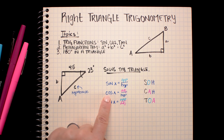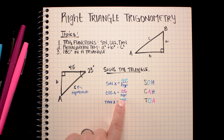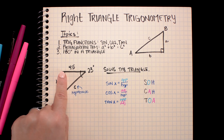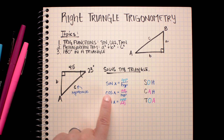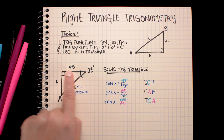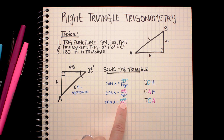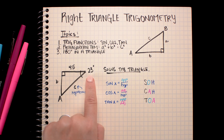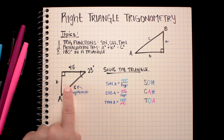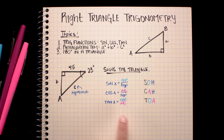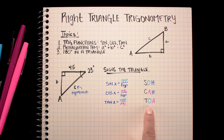The cosine of angle X equals the adjacent leg over the hypotenuse. Working from the 23 degree angle, the adjacent leg is the one next to the angle that's not the hypotenuse — in this case, the leg with measure 4.5. So cosine would be the adjacent 4.5 over the hypotenuse C. The tangent function says that tangent of an angle equals the opposite side over the adjacent side. From the 23 degree angle, the opposite side is B and the adjacent is 4.5.